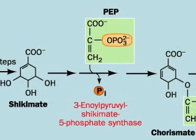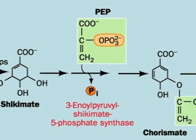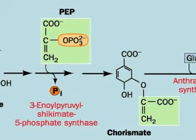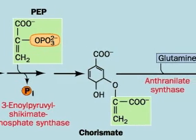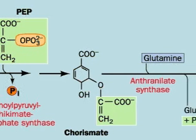In another three reactions, another molecule of PEP is dephosphorylated and added, forming chorismate — a precursor to tyrosine and phenylalanine, as well as tryptophan.